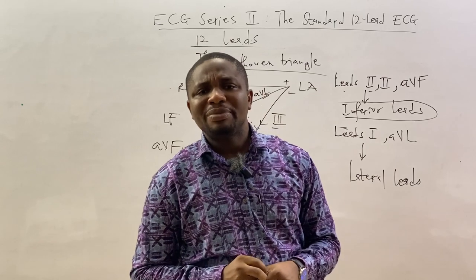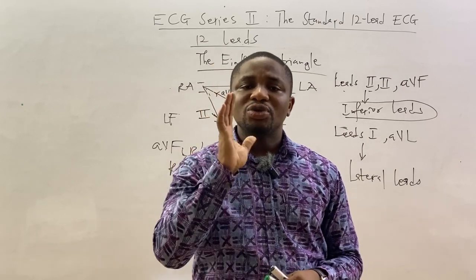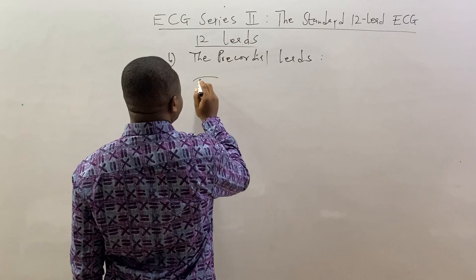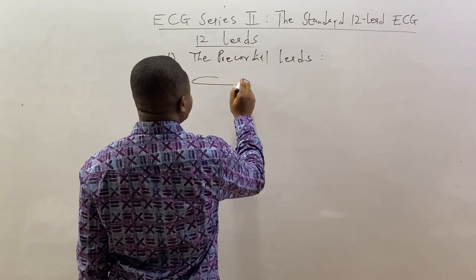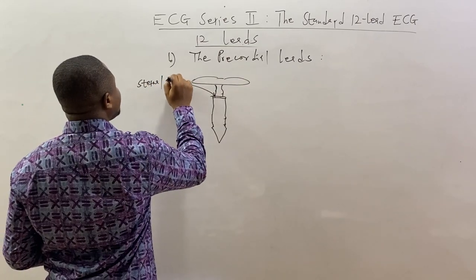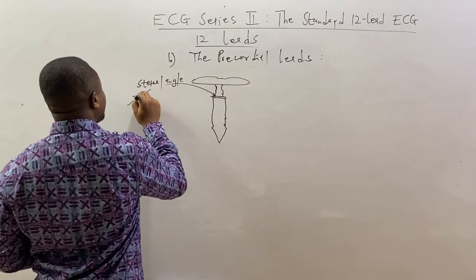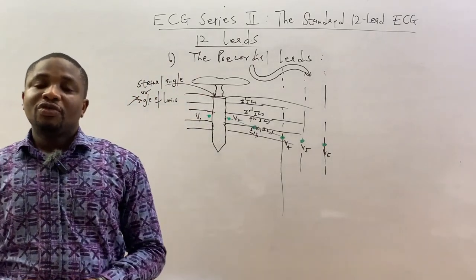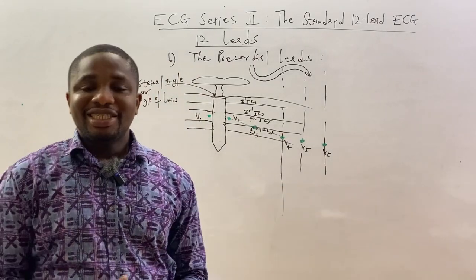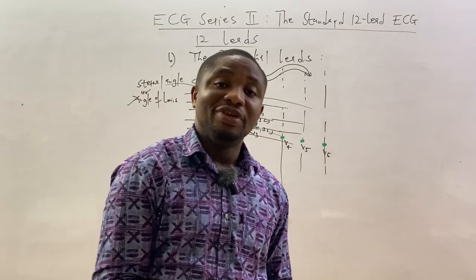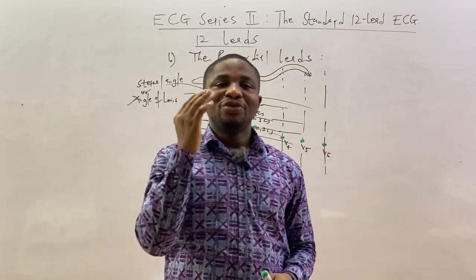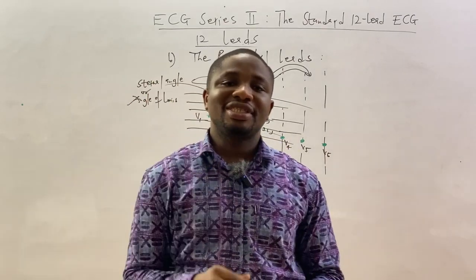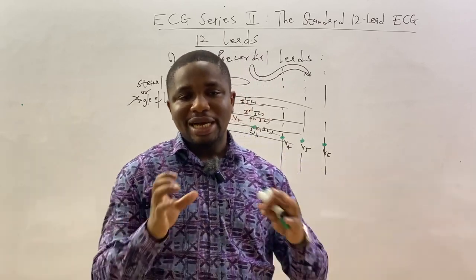Now let's talk about the precordial leads, which are also six in number: V1, V2, V3, V4, V5, and V6. Let's look at their positions and how they are placed.